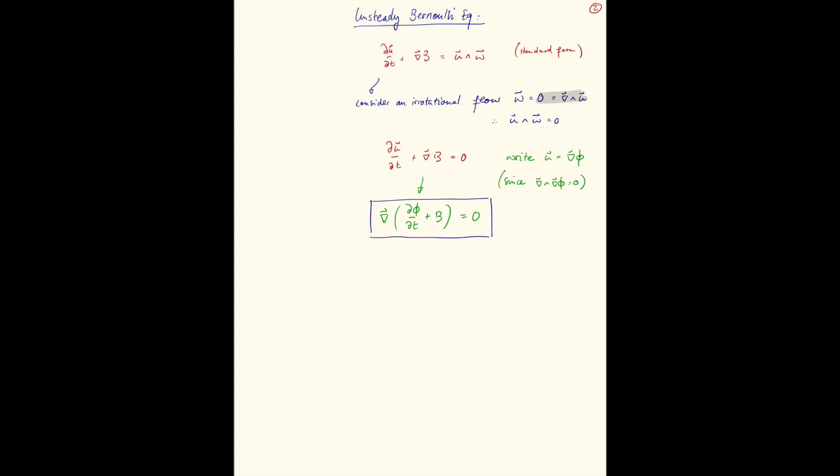Which means that d phi dt plus b, spatially, will have to be a constant.